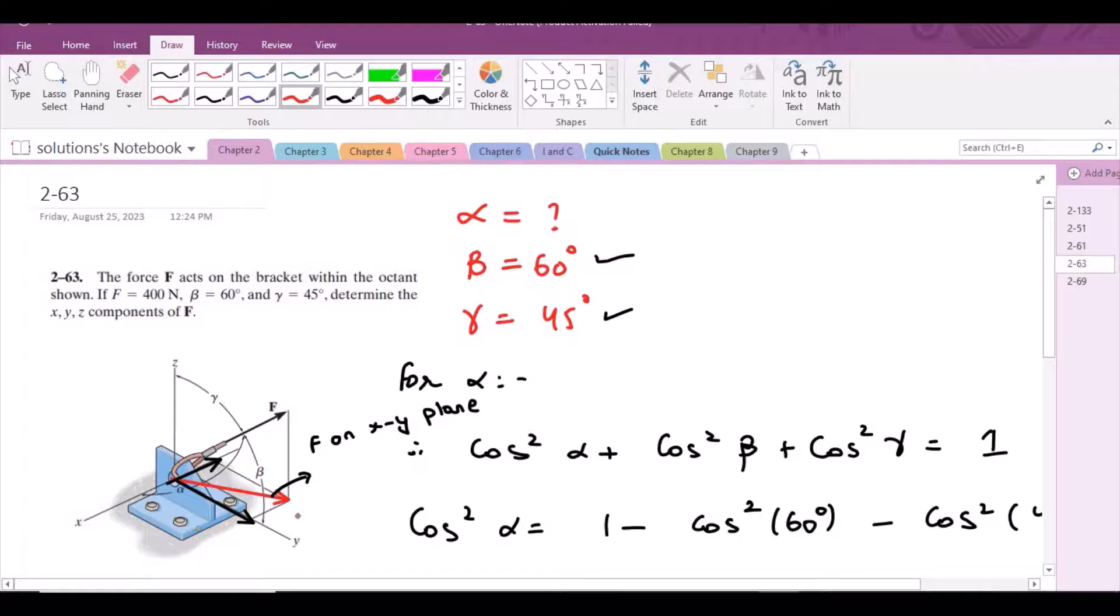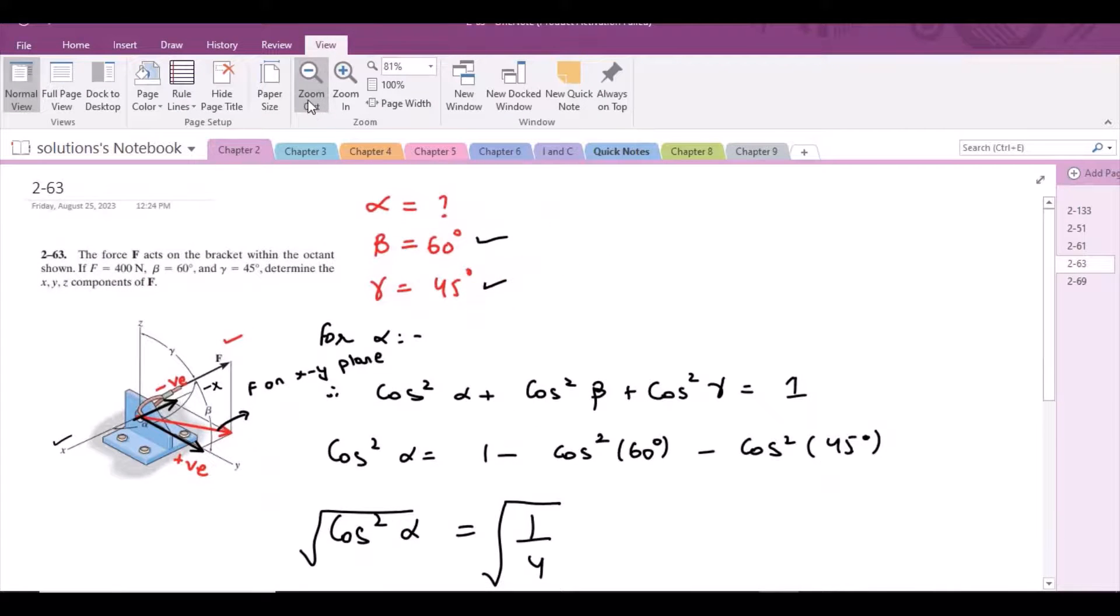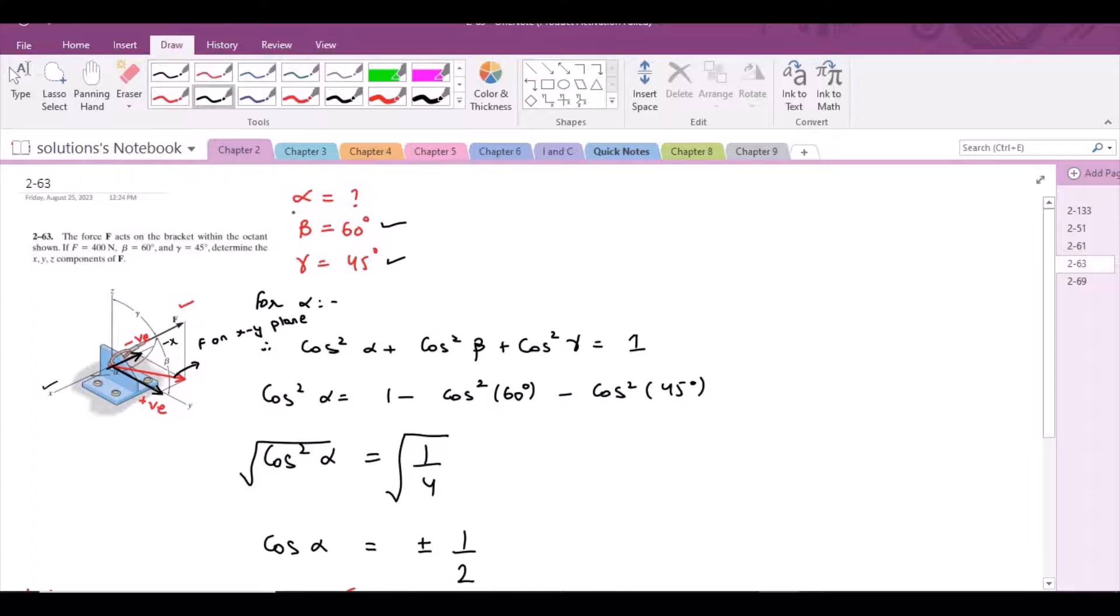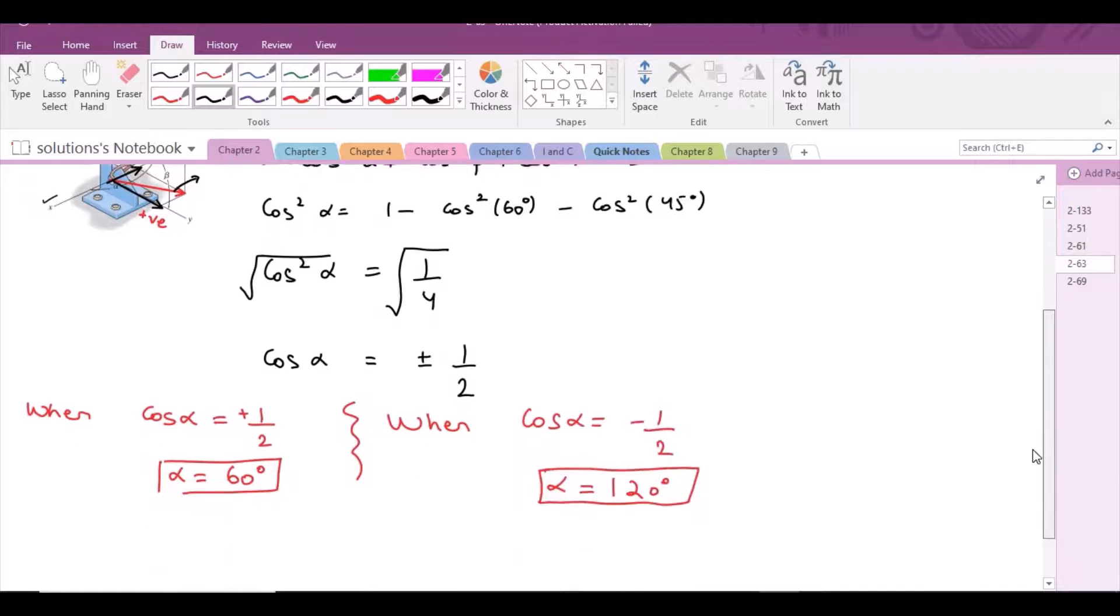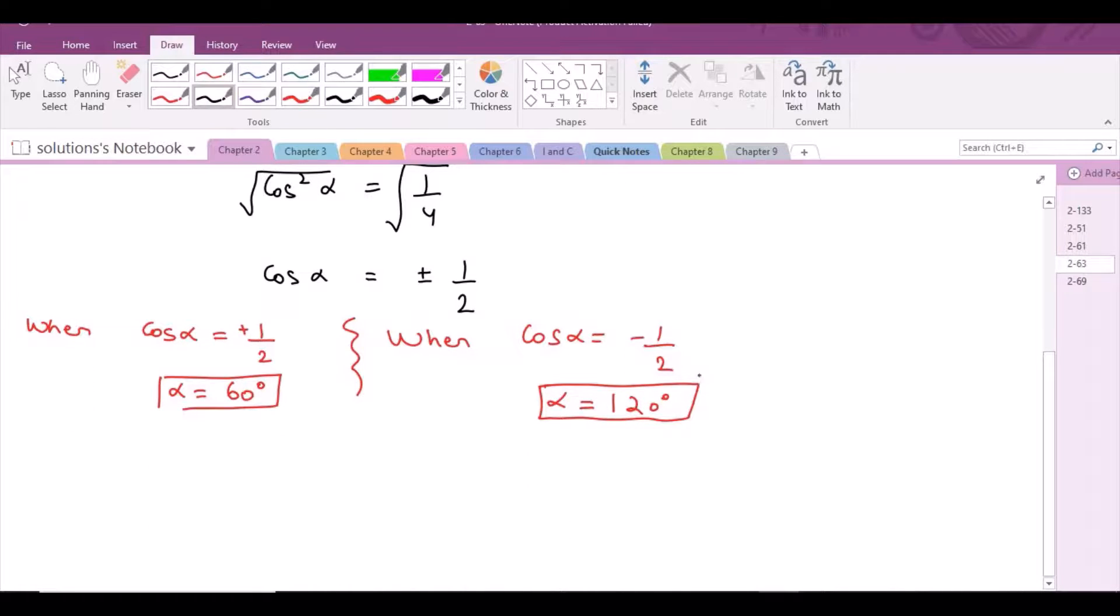You can consider that the y component of this force F is positive because it is directed in the positive y-axis, but the x component of this force F is negative because it is directed in the negative sense of the positive x-axis. So we have to consider that value of alpha that will give us the negative x component.